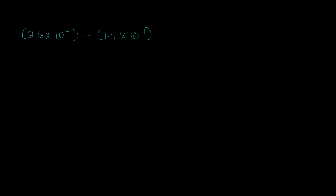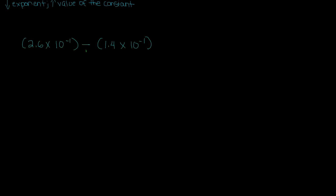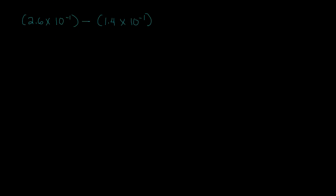In this case we're subtracting, and our constants are 2.6 and 1.4. Our exponents are exactly the same — 10 to the negative 1 and 10 to the negative 1. So we keep the exponent as-is and subtract: 2.6 minus 1.4 gives us 1.2. Our solution is 1.2 times 10 to the negative 1 power.